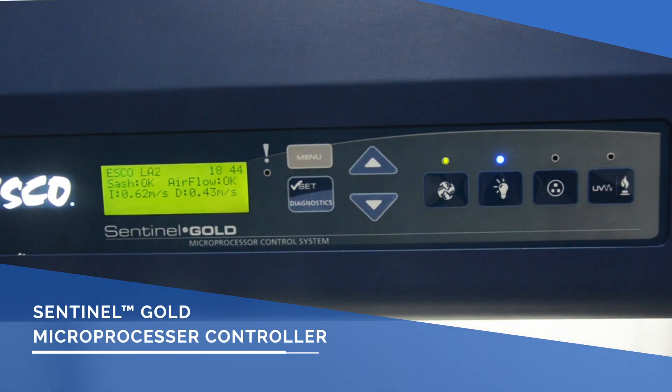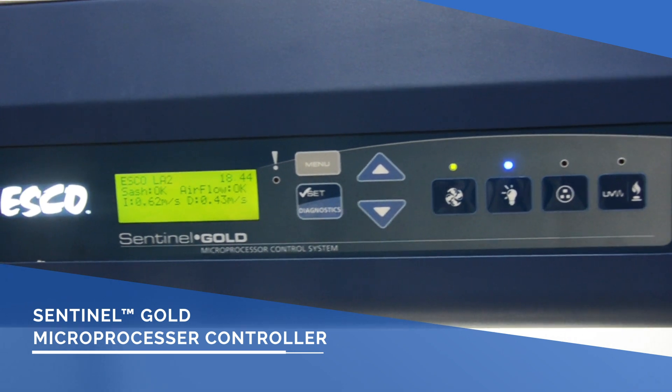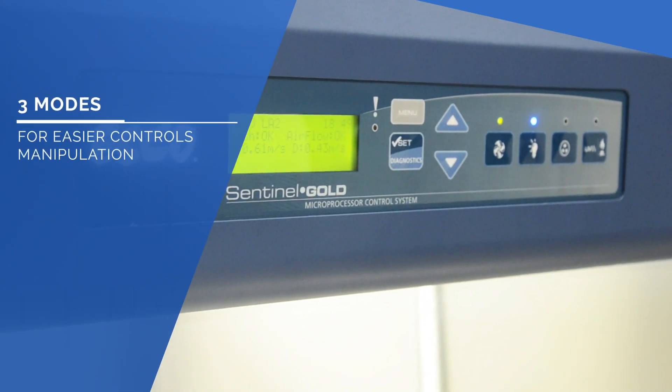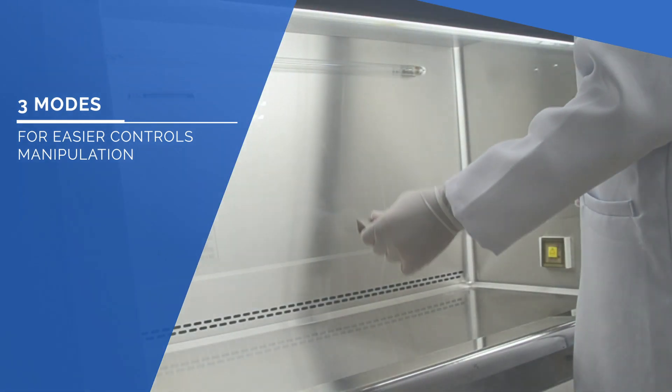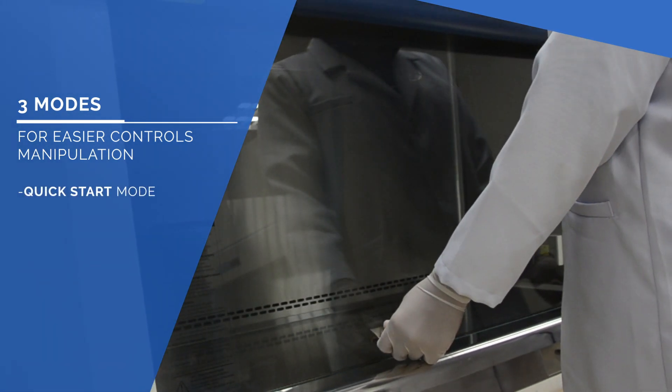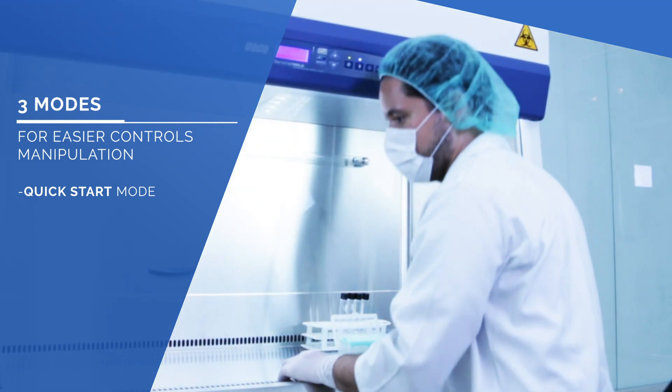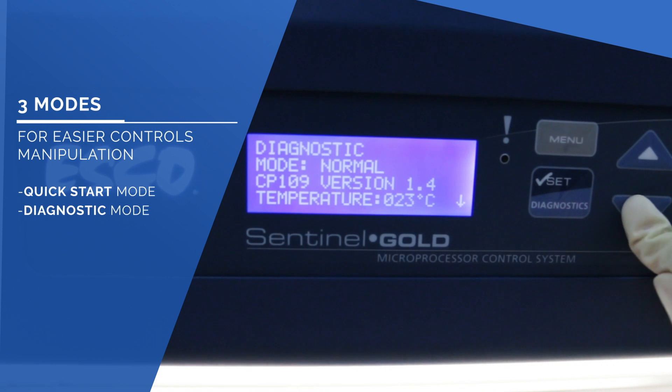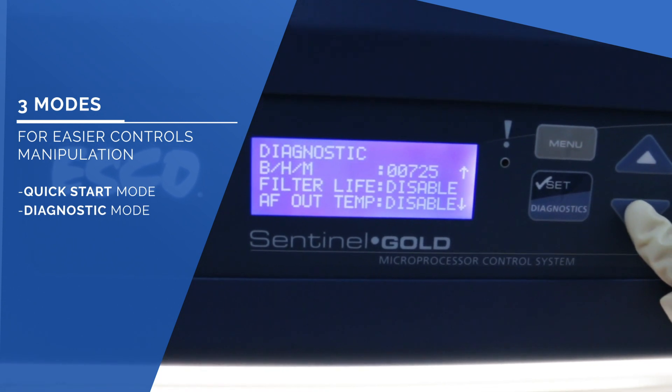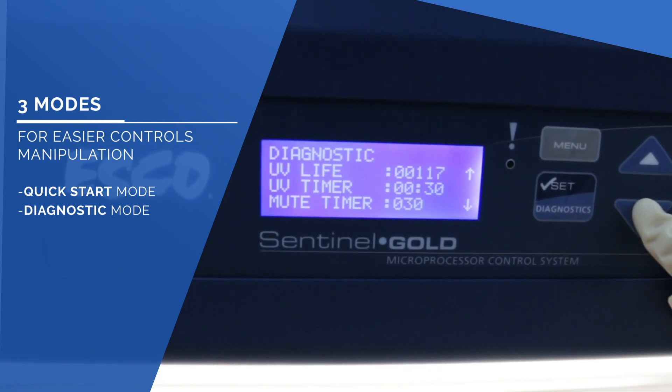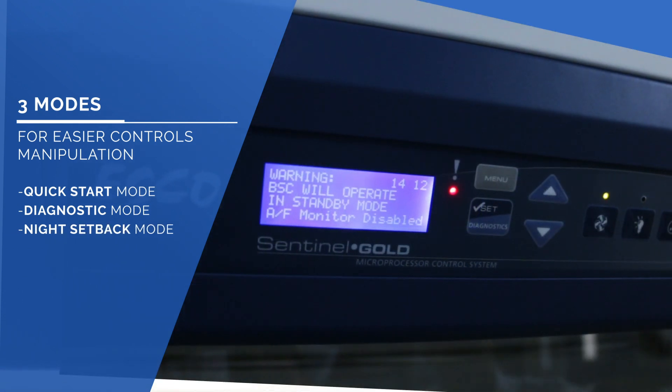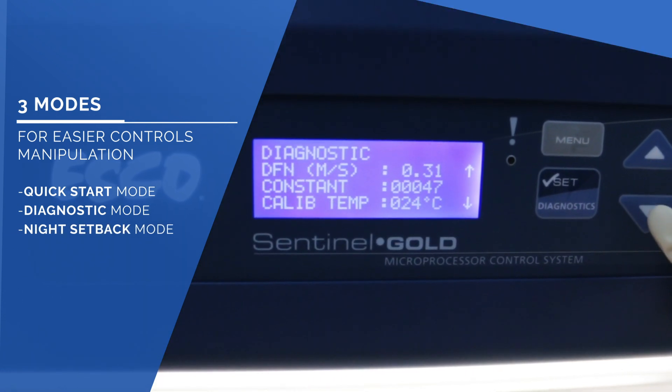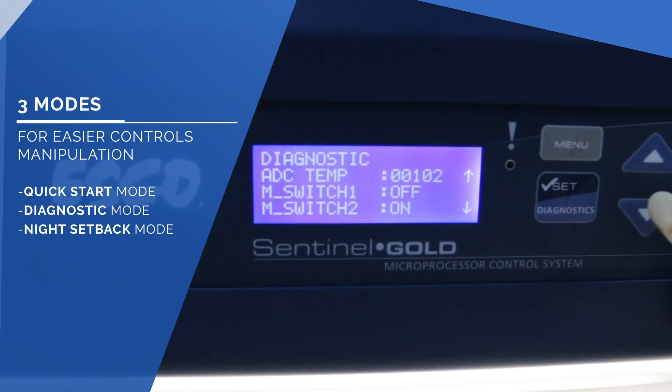The Sentinel Gold Microprocessor Controller comprehensively displays all safety information in one screen. Quick Start Mode allows automatic turning on of the fan and fluorescent lamp when the sash is raised to its working height. Diagnostic Mode for easy checking of the cabinet's operating parameters and assist servicing. Night Setback Mode can provide maintained containment even at energy-saving mode with the fan running at half speed.